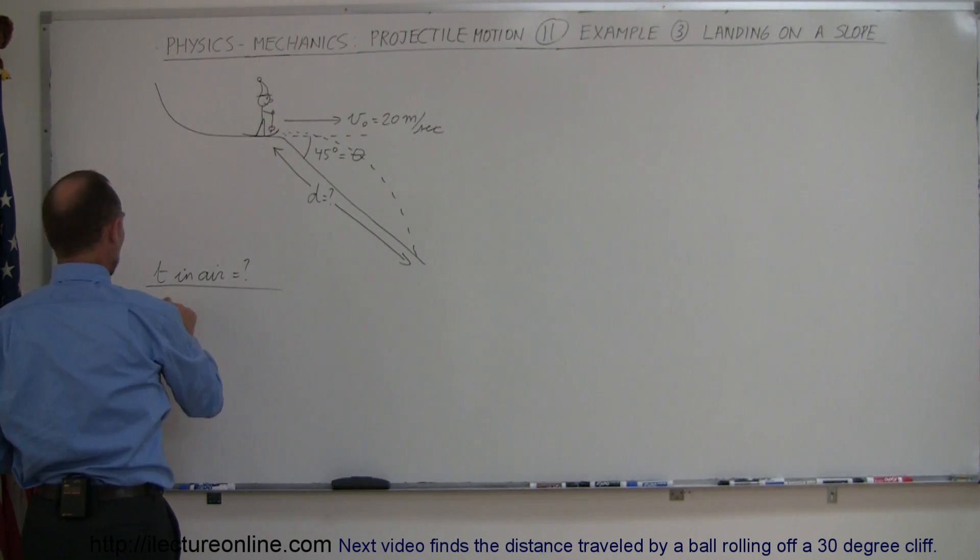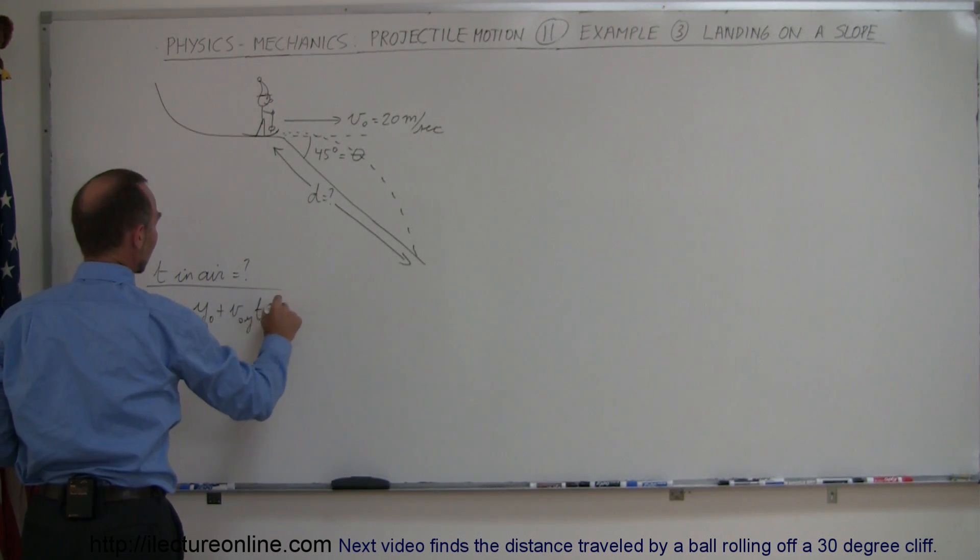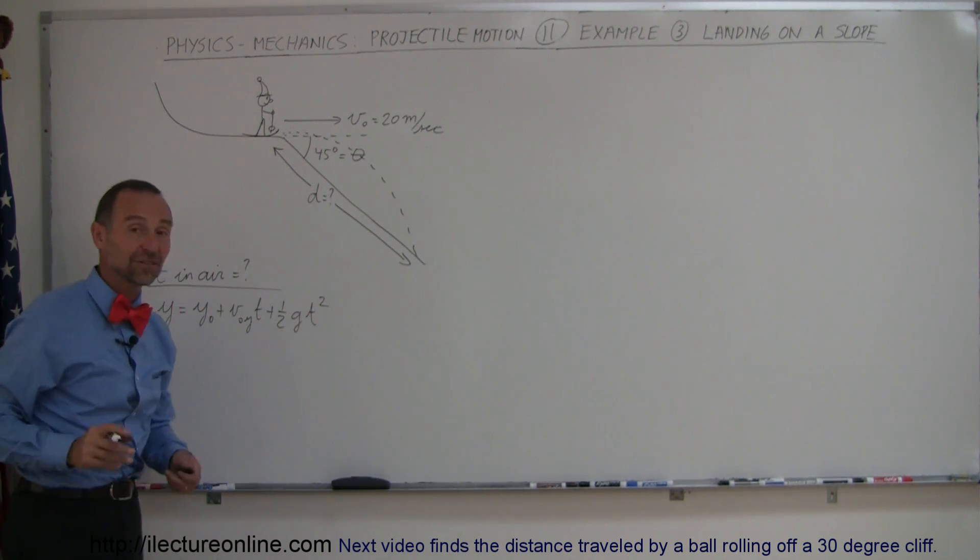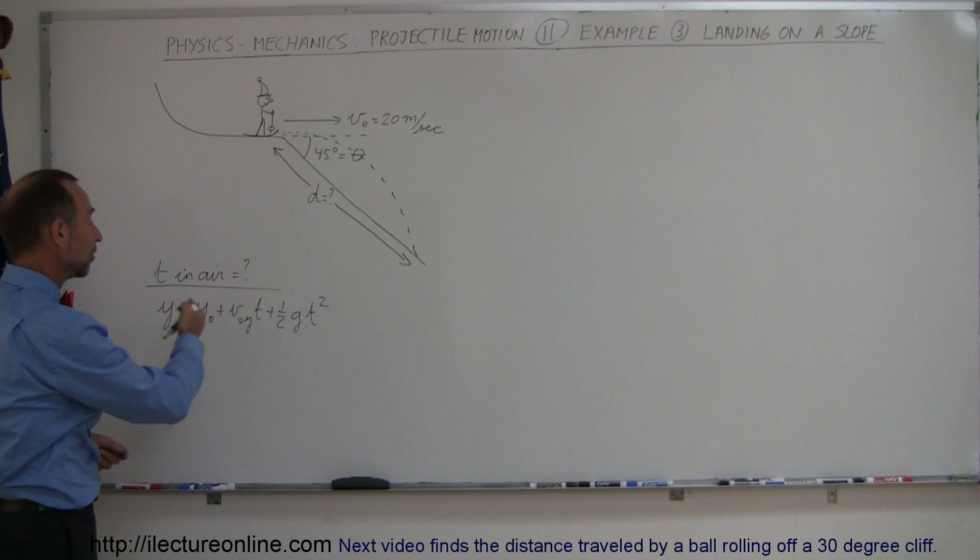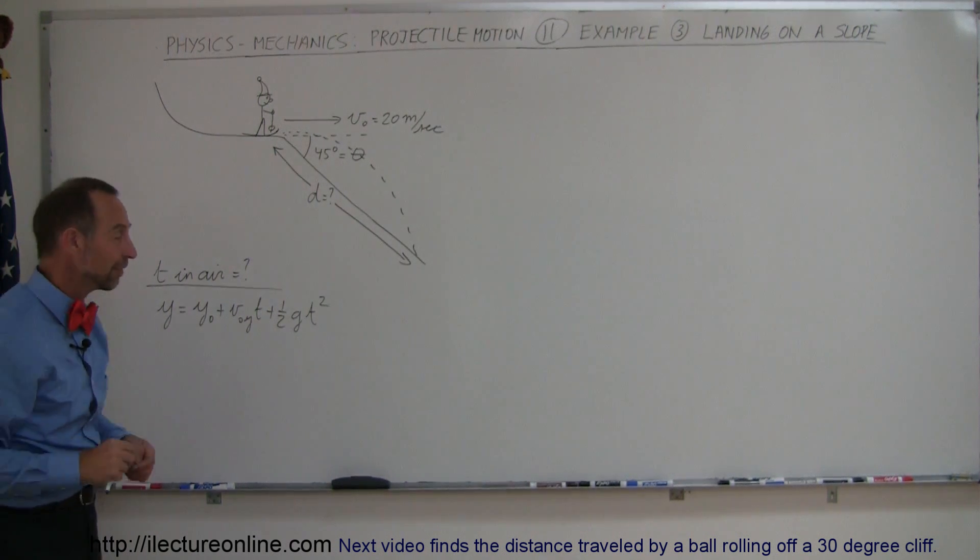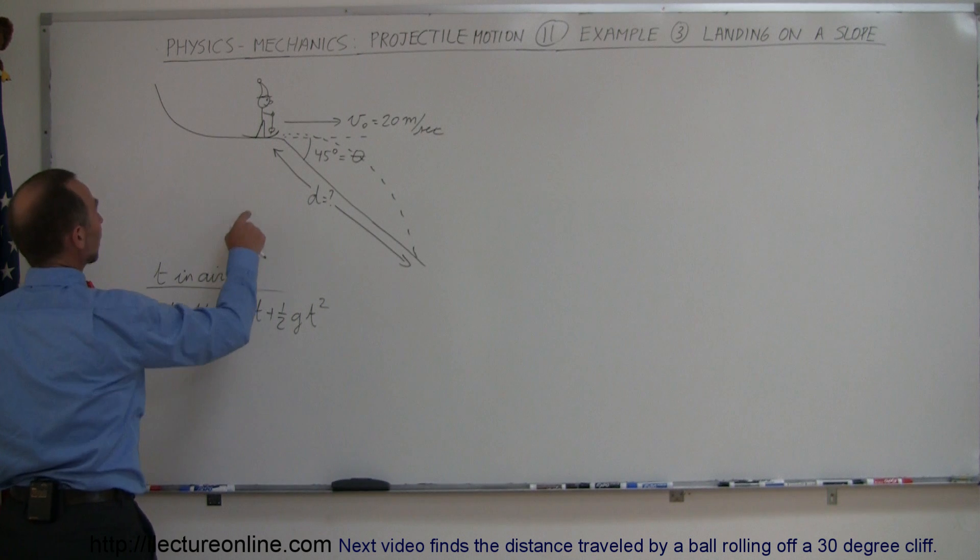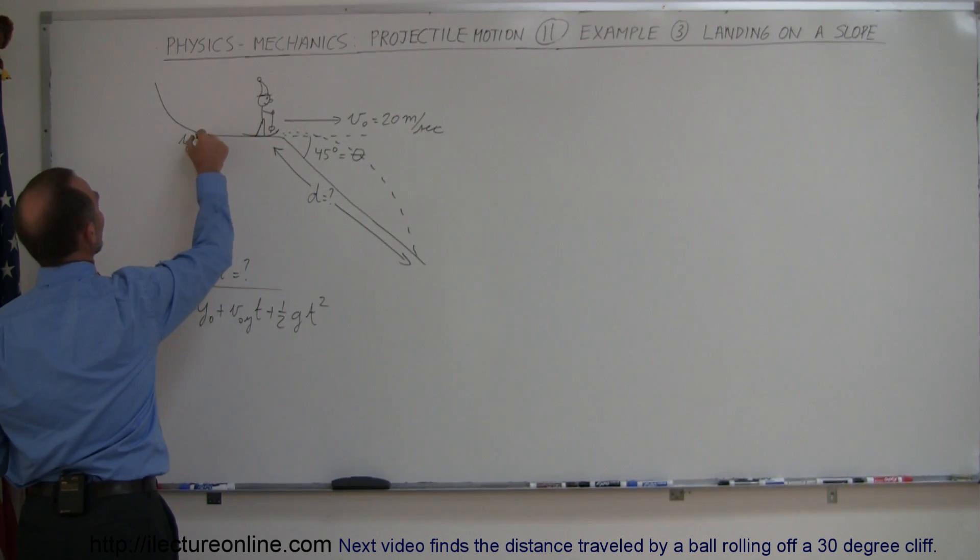and so we use the equation y is equal to y initial plus v initial in the y direction times time plus 1 half g t squared. By now if you've seen several of the videos, you can see we use the same equation over and over again to find time in the air. Initial height,